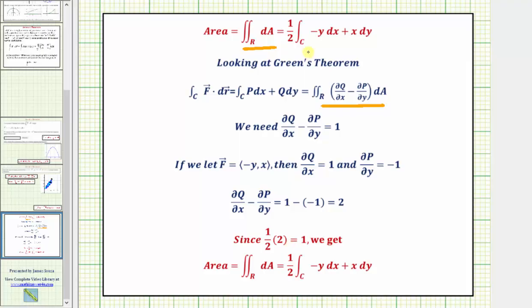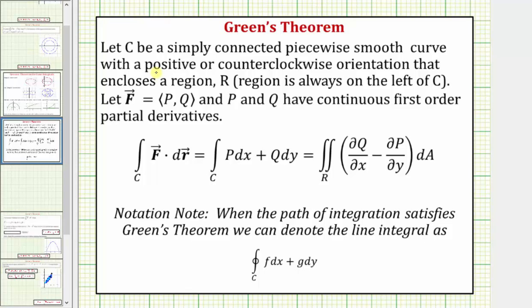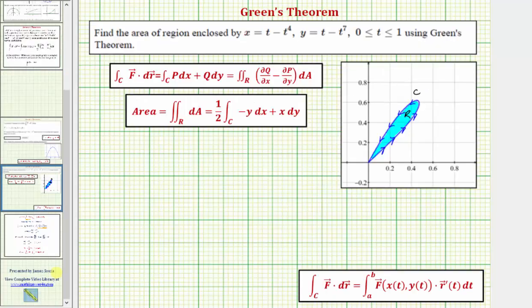Before applying the formula, we need to verify that the curve C satisfies Green's theorem. The curve C must be a simply connected, piecewise smooth curve with a positive (counterclockwise) orientation that encloses a region R. If the orientation is positive, region R is always on the left of curve C. The curve given by the parametric equations is traced in that direction, so it has a positive orientation and Green's theorem is satisfied.